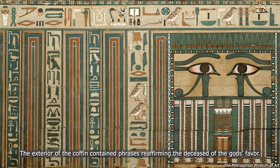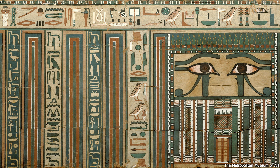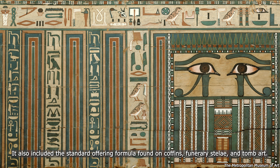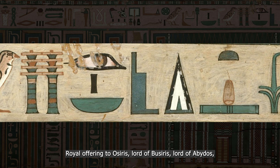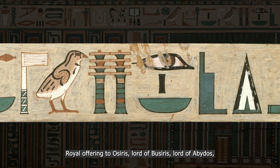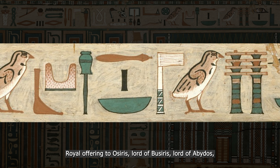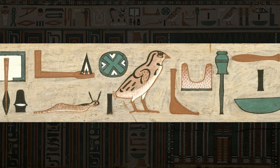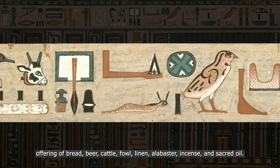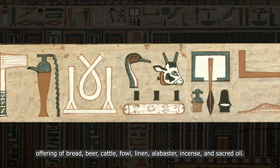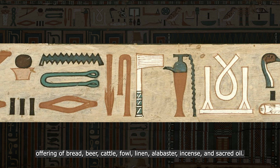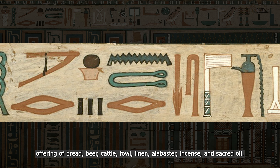The exterior of the coffin contained phrases reaffirming the deceased of the gods' favour. It also included the standard offering formula found on coffins, funerary stelae, and tomb art: 'Royal offering to Osiris, lord of Busiris, lord of Abydos. Offering of bread, beer, cattle, fowl, linen, alabaster, incense, and sacred oil.'